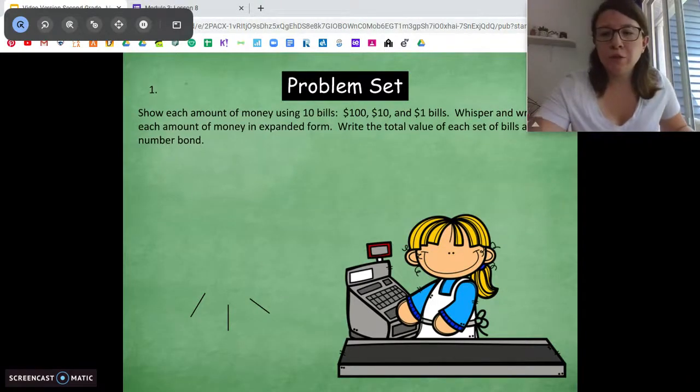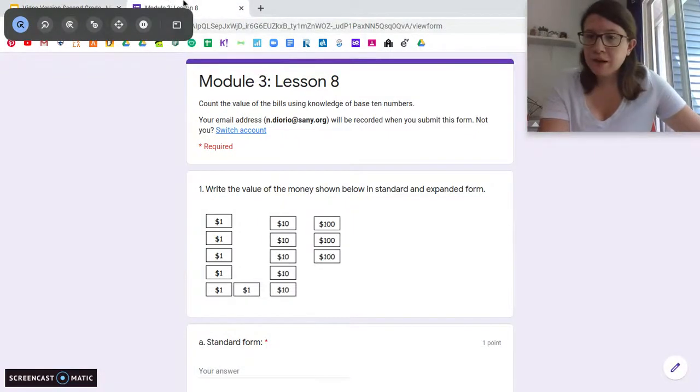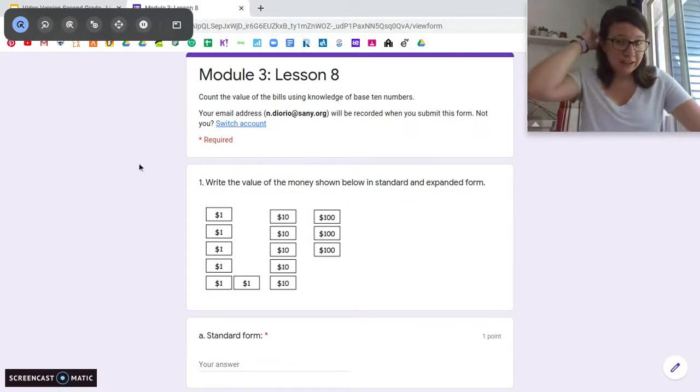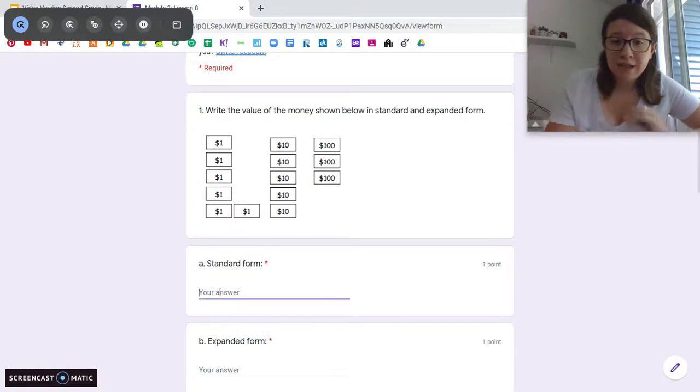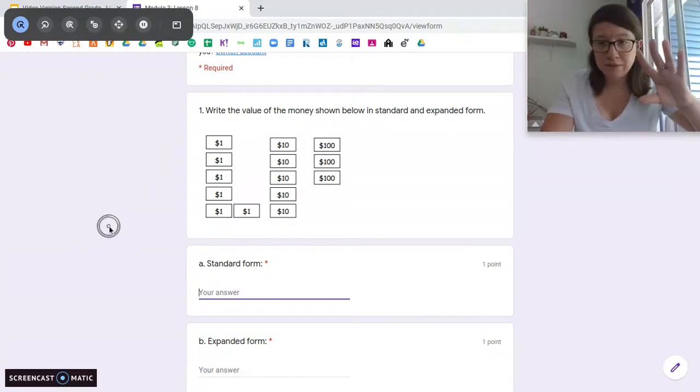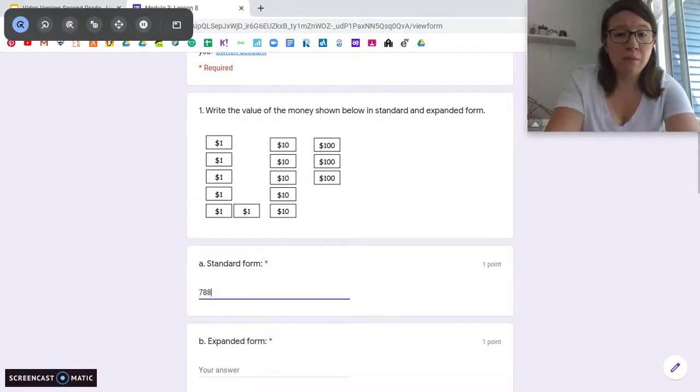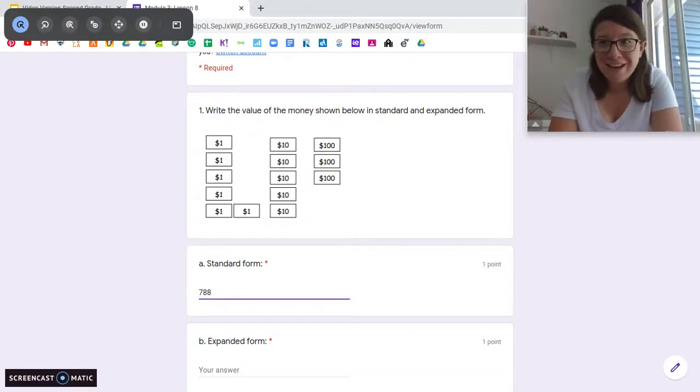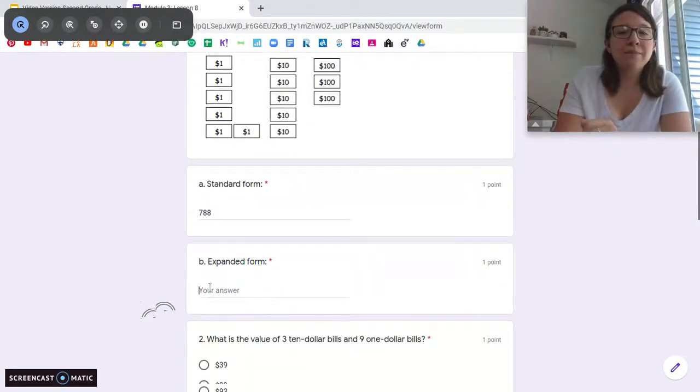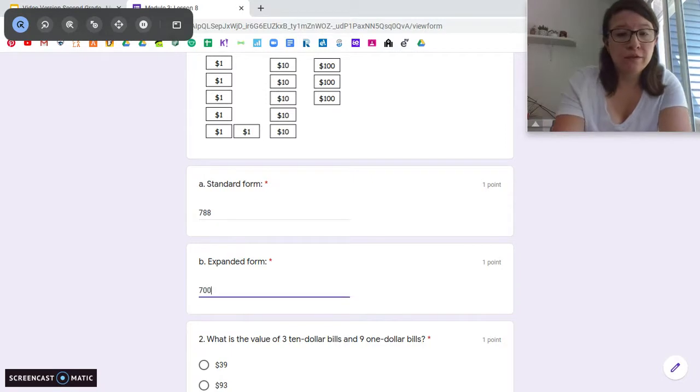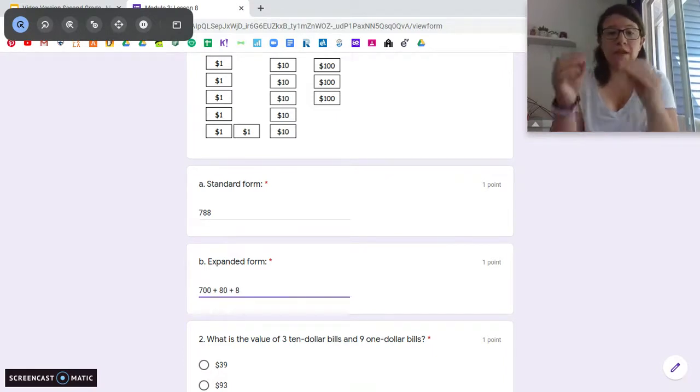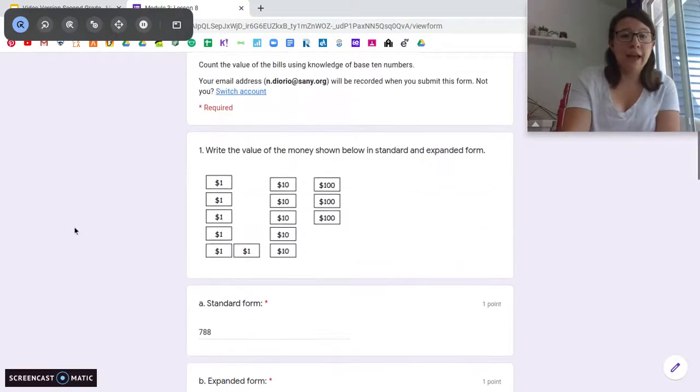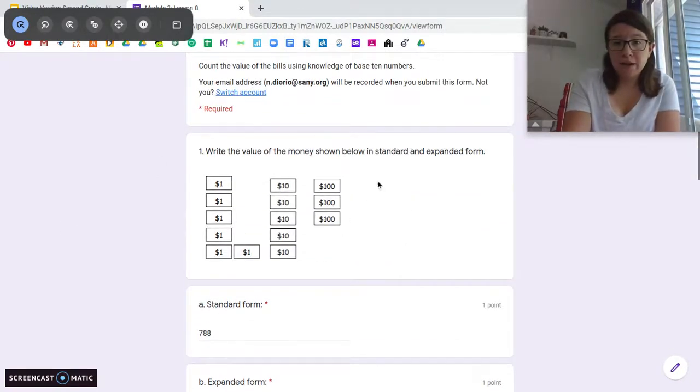Okay. Woo! I'm going to get us into our exit ticket. So, what you're going to need to do is kind of the same thing we just did in our lesson. You're going to count the value of the money. First, you're going to write it in standard form. Remember, standard form is just the number. So, count your hundreds, count your tens, count your ones, add them together. Write the number. So, this is going to be your number. Whatever that number is. It's not 788, I promise. But I'm not going to tell you the answer. And then your expanded form, you're going to write your addition sentence. So, for this one, for my number 788, I would write this. Okay. Standard form is your number. Expanded form is your addition sentence. Based on A and B, you're both based on this money right here.